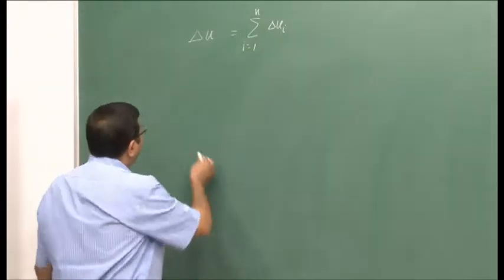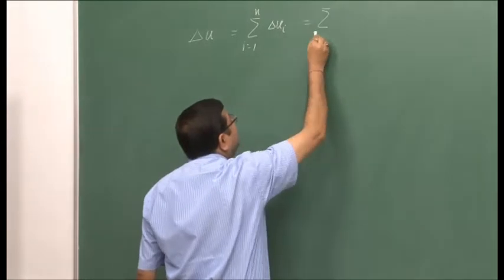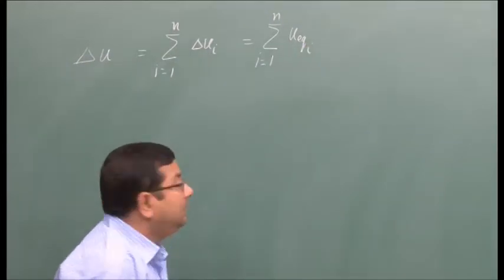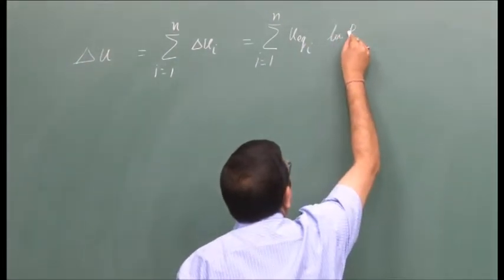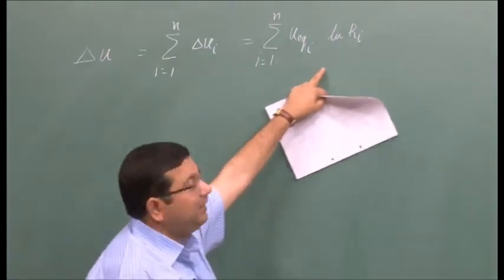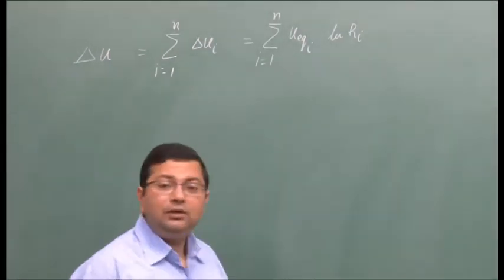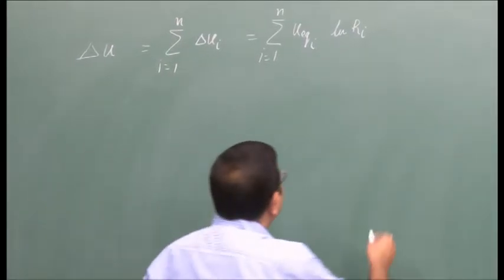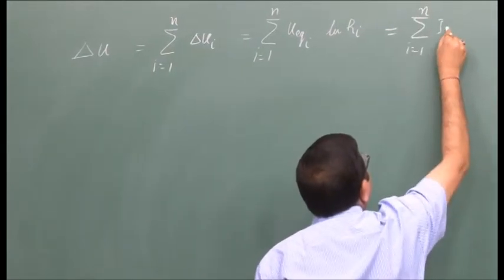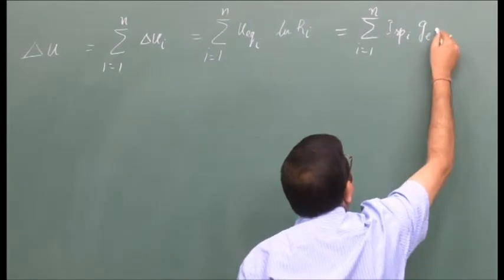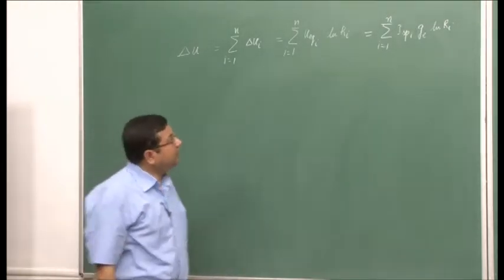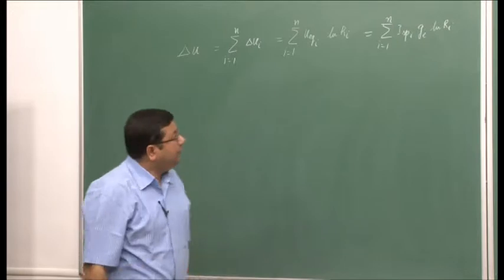For a given stage, the velocity increment is a function of equivalent velocity and the mass ratio. Therefore, the total velocity increment can be written as a summation. The equivalent velocity is a function of the specific impulse of that stage, so the total velocity increment equals the sum from i=1 to n of Isp_i times g_e times ln(r_i), where Isp_i represents the specific impulse of individual stages.